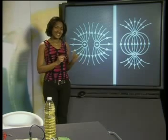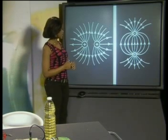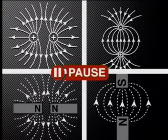Let's look at the diagrams from the last two experiments again. The patterns shown by these two electric fields look very familiar. Compare the patterns of the two electric fields and these two magnetic fields. Can you see the similarities between these two types of fields?